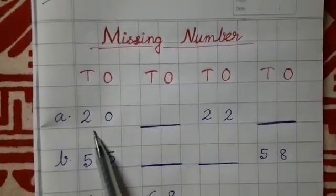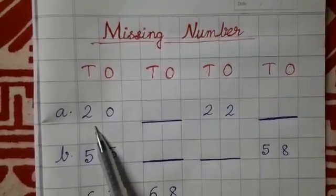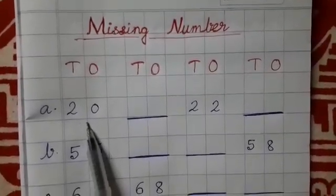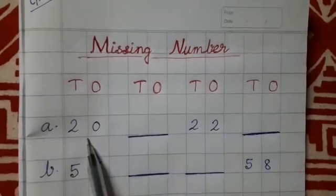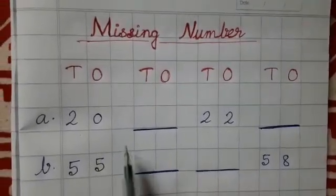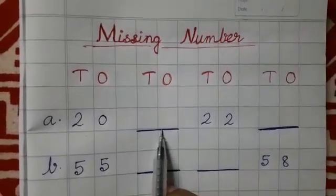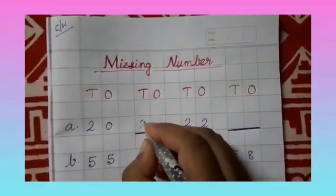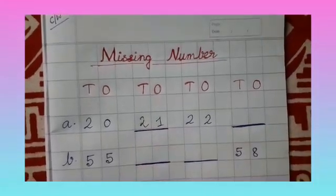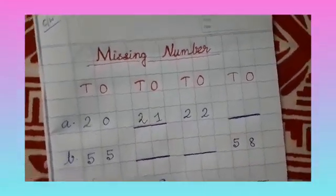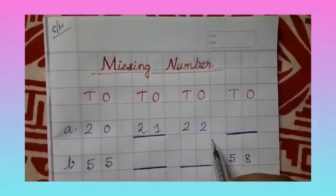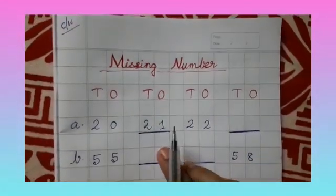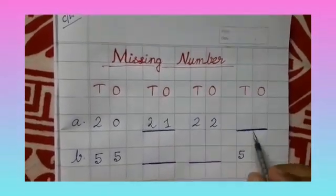First in number a, as you can see it is written 20, 20, 20. What comes after 20? After 20 it is 21. If you count after 20 you get 21, so you will write here 21. Next, there is 22. What comes after 22? After 20, 21, 22, there is 23, so you will write here 23.